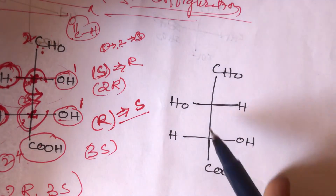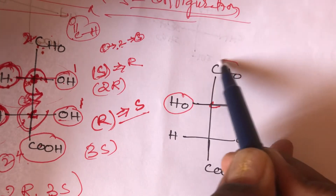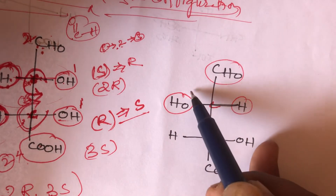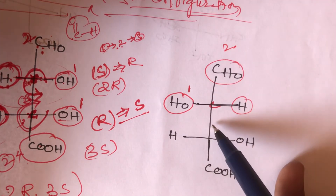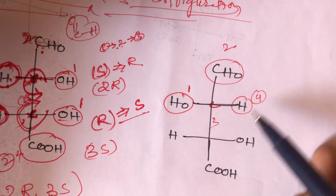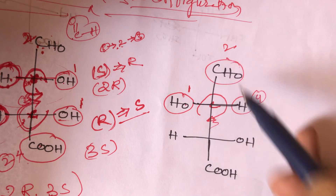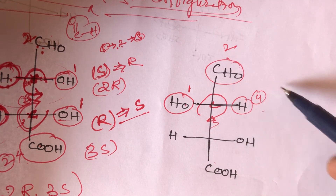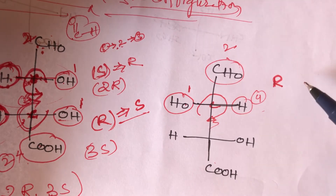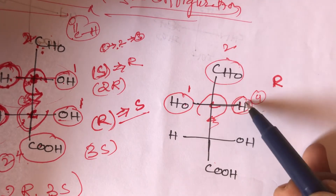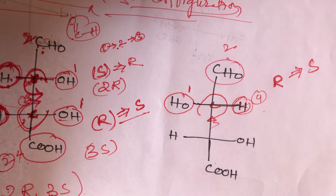Now for the second example with the same type of structure: at the chiral second carbon, it has an OH group, a CHO group, hydrogen, and the complete group below. First priority is OH, second priority is CHO (aldehyde), third priority is the complete downward group, and fourth is hydrogen. The direction is clockwise, meaning R configuration. But the least priority group hydrogen is on the horizontal line, so R configuration becomes S. This is 2S.